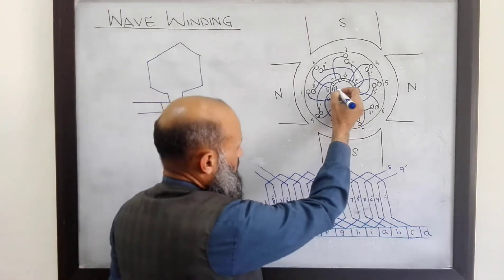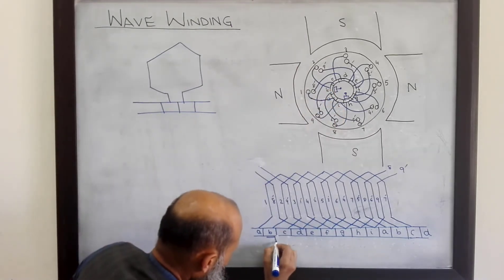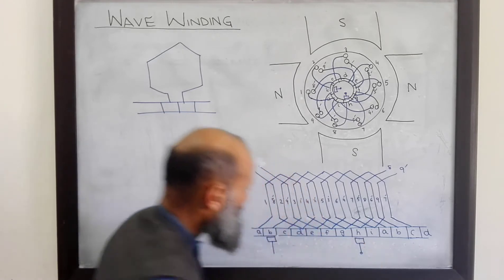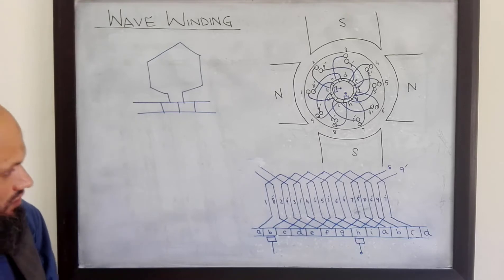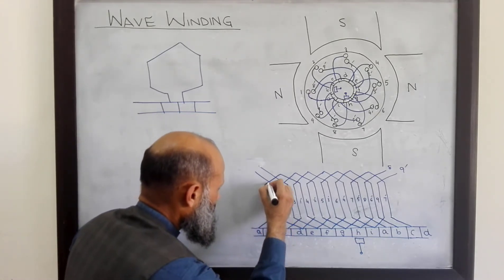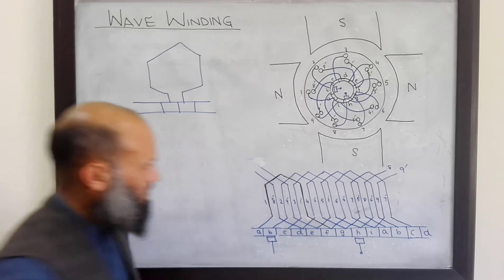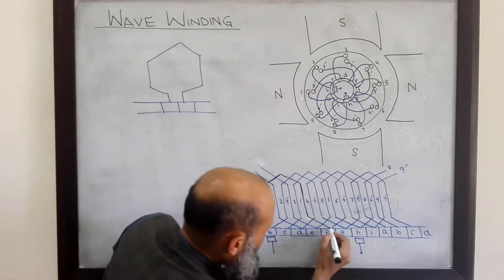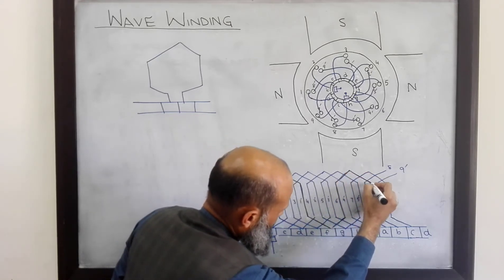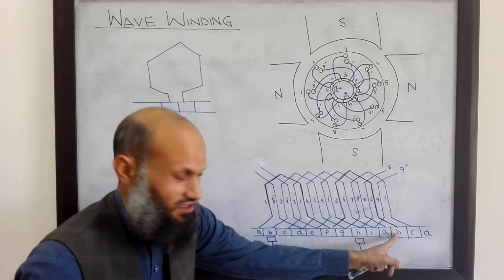However, for the time being, just consider that one brush is placed in contact with commutator segment B, and the other brush is placed in contact with commutator segment H. In this particular winding, if you look at coil one — this is coil one — in series with it is connected coil six, which is this one. And the end of the second coil is connected to commutator segment B.